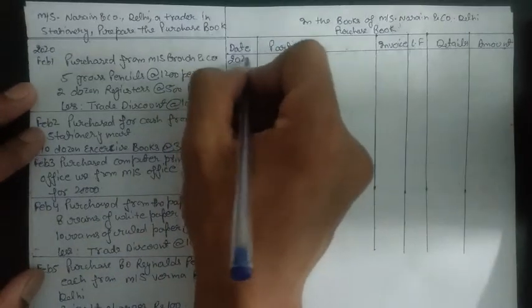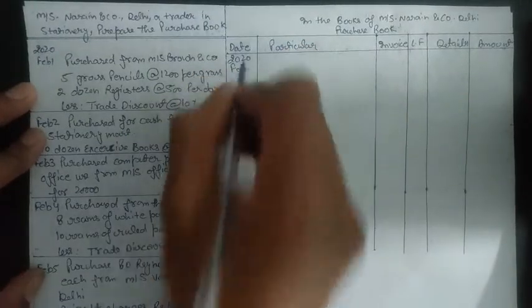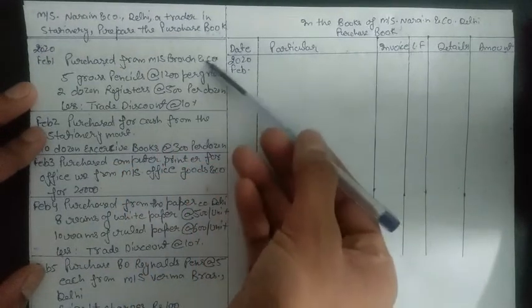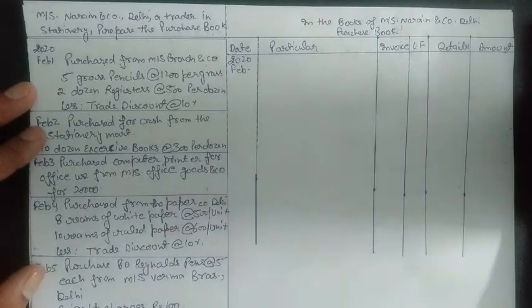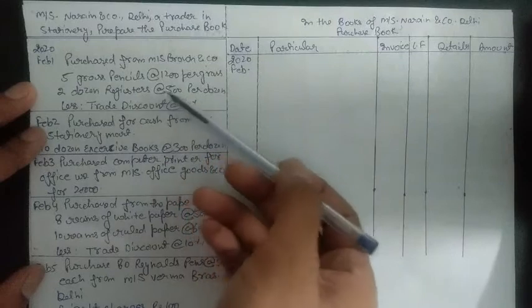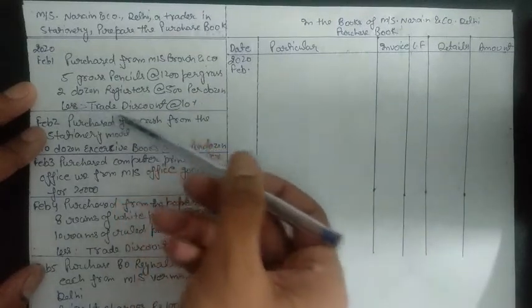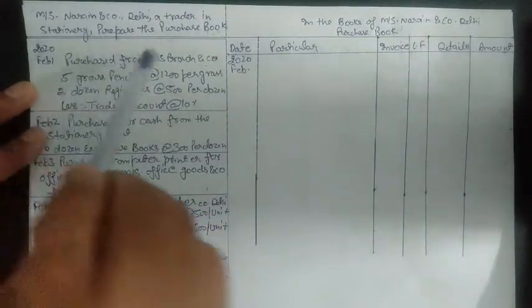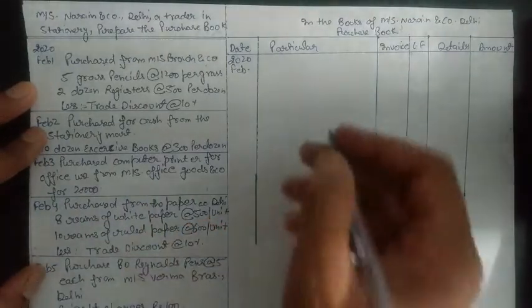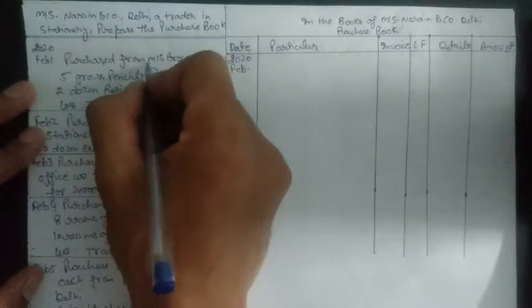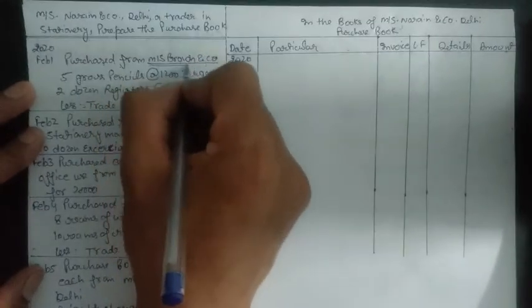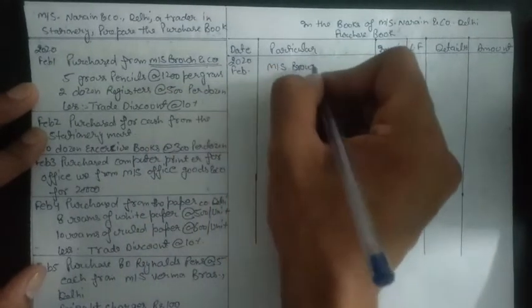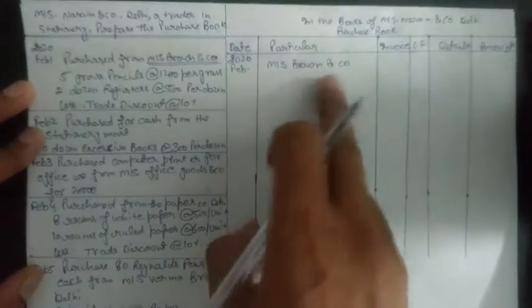On February 1st, Mr. Narain purchased goods from Mr. Brown and Company. The details of purchases are: five gross pencils at the rate of 1200 per gross, two dozen registers at the rate of 500 per dozen, and lastly a trade discount of 10 percent from Mr. Brown. To post this entry we first put the name of the seller — we are purchasing goods from Mr. Brown and Company.